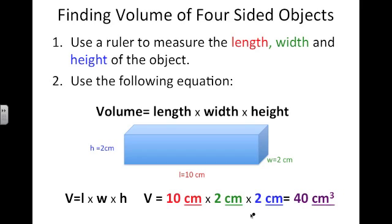Now this 3 here tells you that you multiplied cm 3 times: 1, 2, 3. Therefore the 3 goes right there.